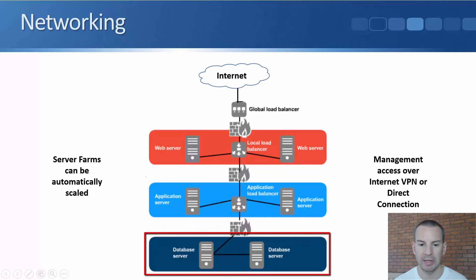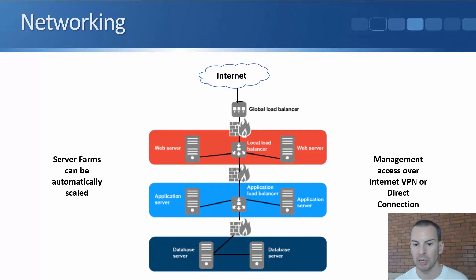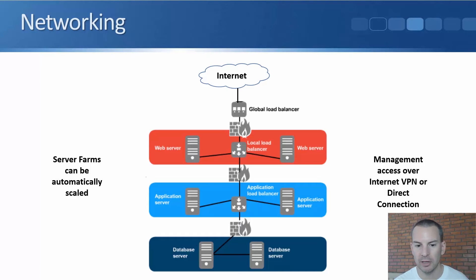At the back end for my database servers, traffic should not hit them directly from the internet or from the web servers. I'm going to have a firewall in front of them in a different subnet, with firewall rules that only allow traffic from the application servers on the correct ports. I don't have a load balancer in front of my database servers because for this example application, that is handled within the application itself. I'm going to have at least two database servers because I don't want a single point of failure.